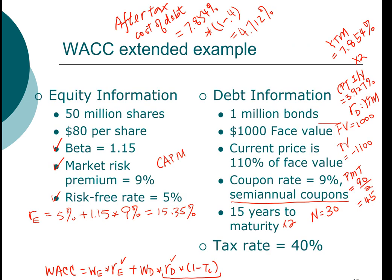Now we have all the cost components. The next step is to compute the capital structure weights. We are told there are 50 million shares of stock outstanding at $80 per share, so the total market value of equity is 50 million shares times $80, giving us $4 billion. For debt, we have 1 million bonds at a market value of 110 percent of face value — $1,100 per bond — so 1 million bonds times $1,100 gives us $1.1 billion.